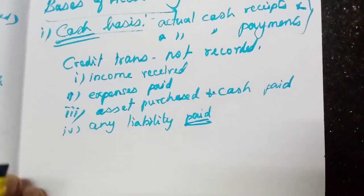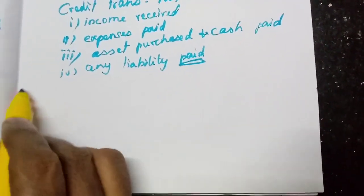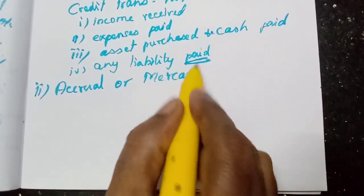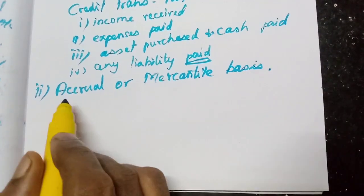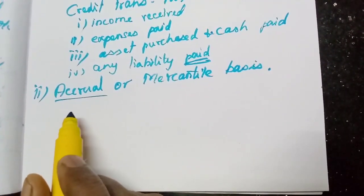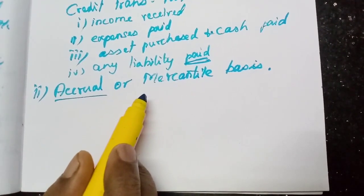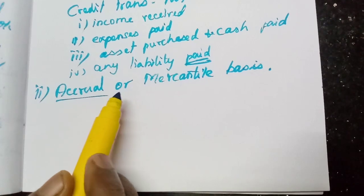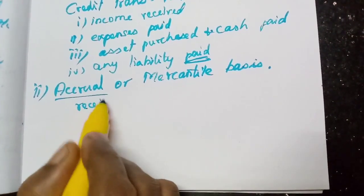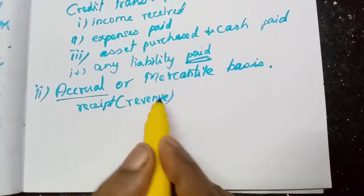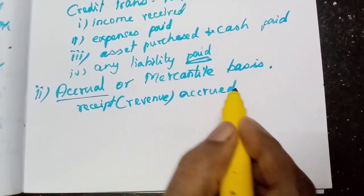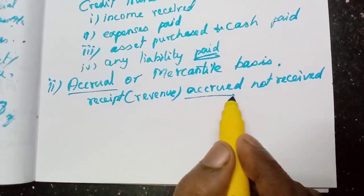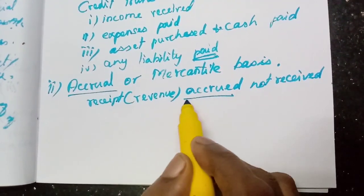The second is accrual or mercantile basis, which many organizations follow. Under this basis, they do not consider whether cash has actually been received or paid. What matters is whether income has accrued. For example, if rent has accrued — meaning it is due to be received in March but will actually be received on 1st April — the accounts close in March, so the rent is still included.